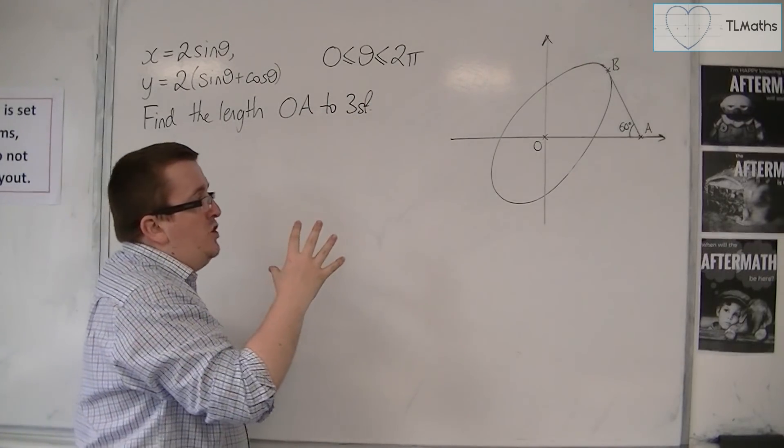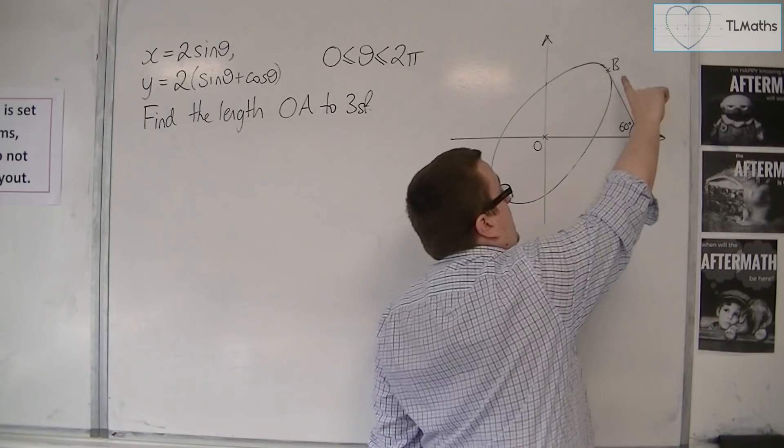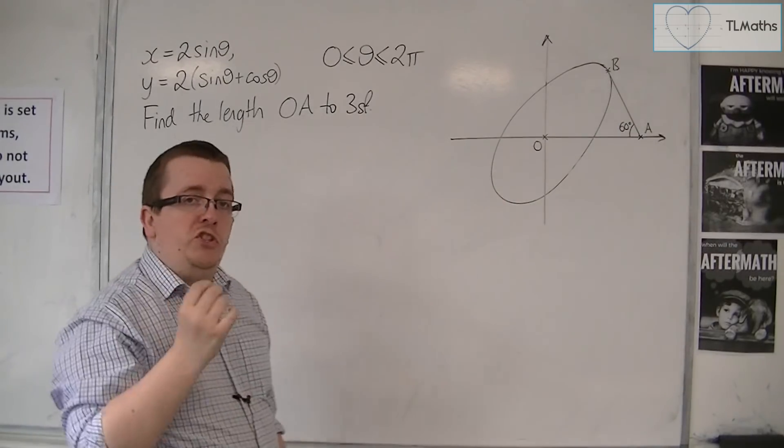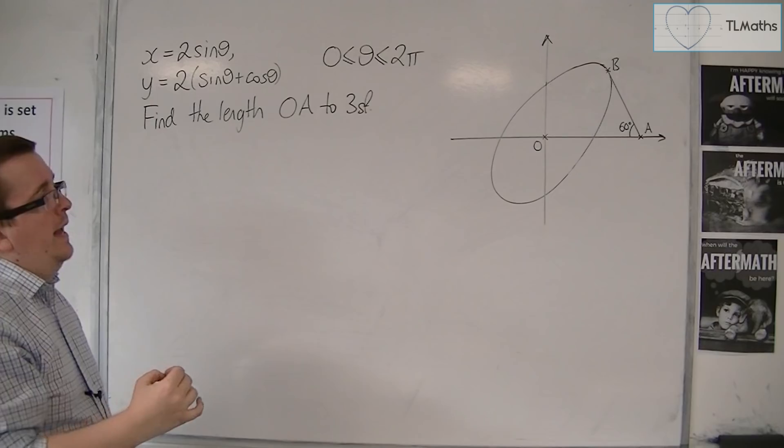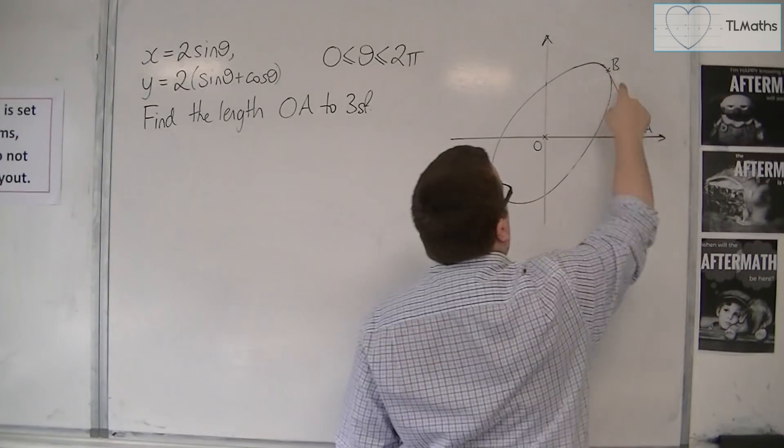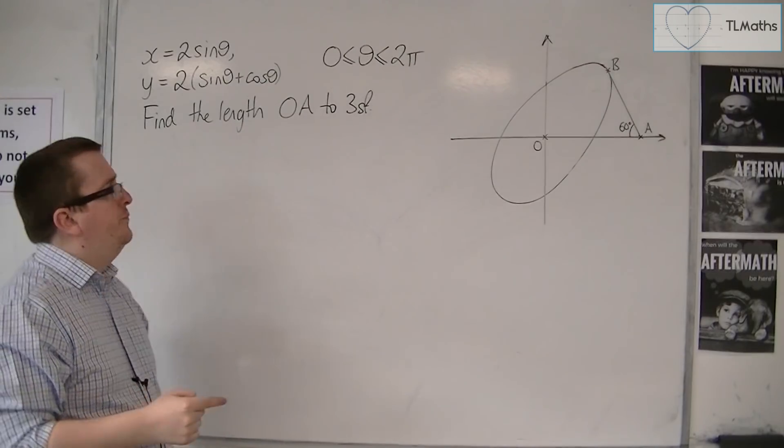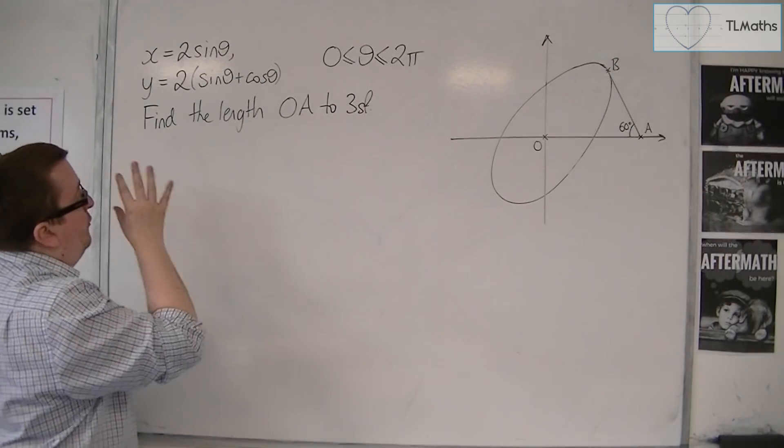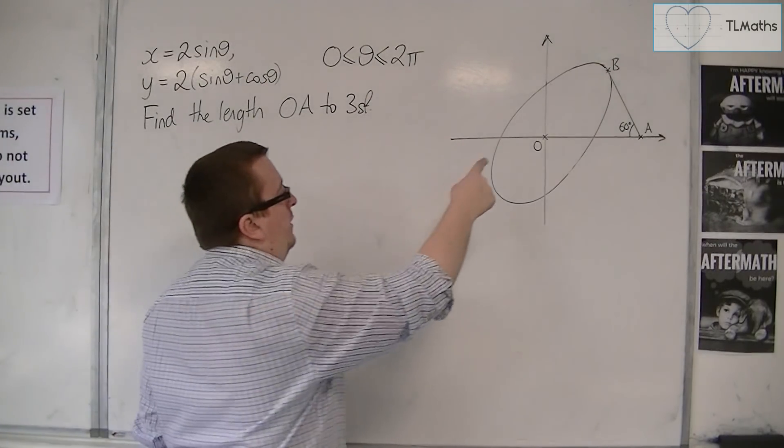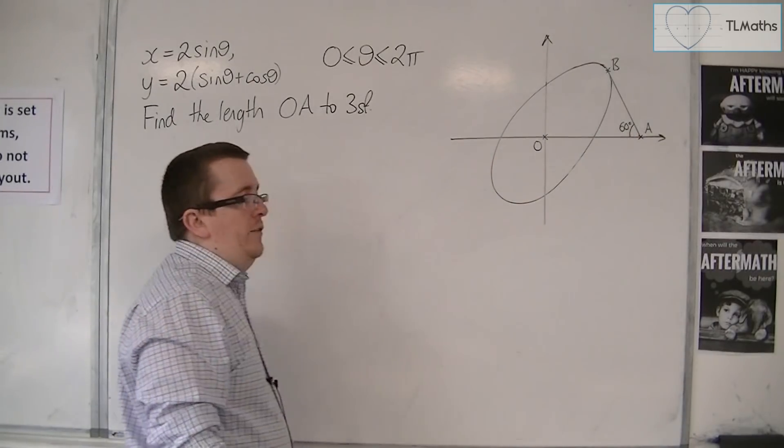We've been given that AB is a tangent to the curve at B and that line is making a 60 degree angle with the horizontal. We need to find the length of OA to 3 significant figures.